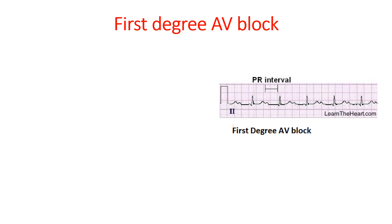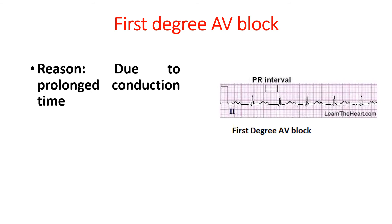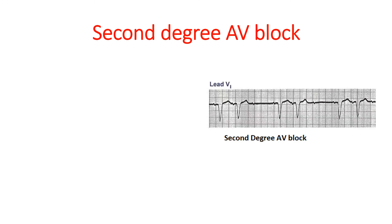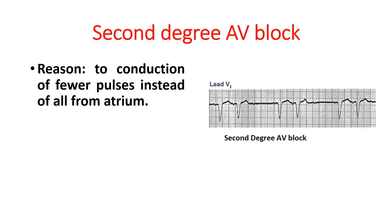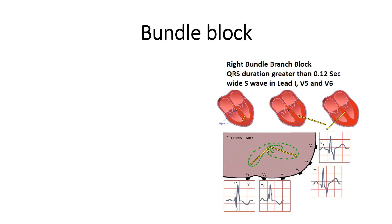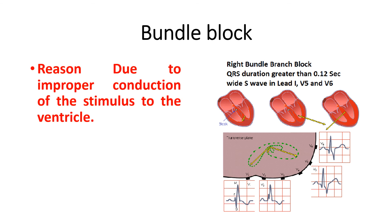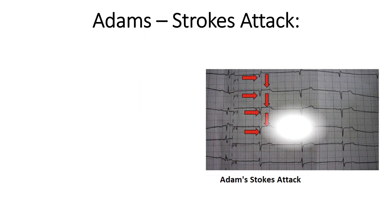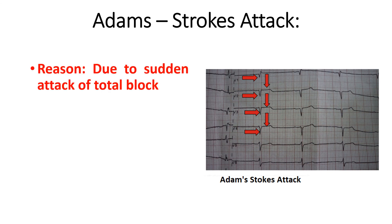First degree AV block is represented here. The reason for this first degree AV block is due to prolonged conduction time. Second degree AV block — the reason is due to conduction of fewer pulses instead of all pulses from the atrium. Third degree AV block — the reason is due to asynchronous action of the atrium and ventricle. Bundle block — the reason is due to improper conduction of the stimulus to the ventricle. Adams-Stokes attack — the reason is due to a sudden attack of total block.